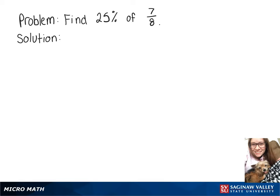In this video, we're going to find 25% of 7 over 8. So we'll write 25% as a fraction, 25 over 100, and multiply it by 7 over 8.